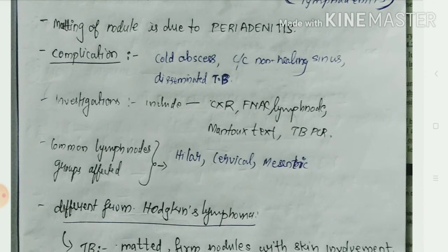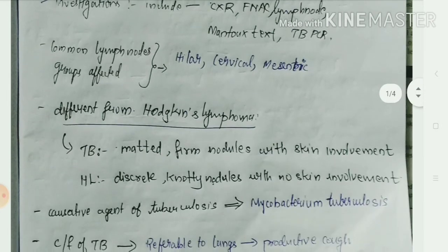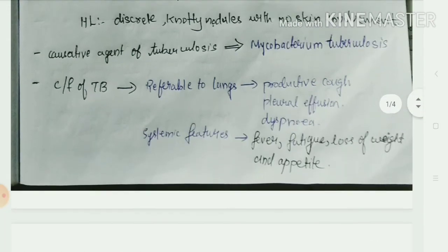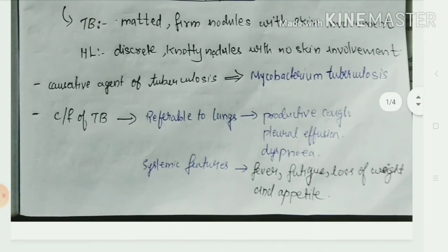The common lymph node groups affected are hilar, cervical, and mesenteric lymph nodes. Differentiating from Hodgkin's lymphoma: in TB, there are matted firm nodules with skin involvement, whereas in Hodgkin's lymphoma, there are discrete rubbery nodules with no skin involvement.